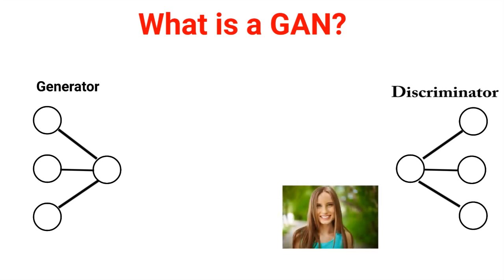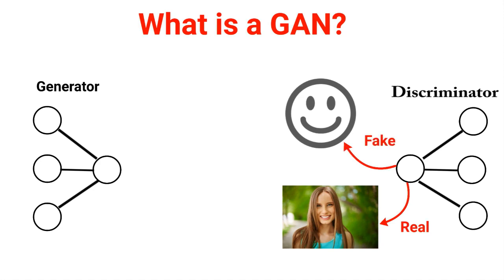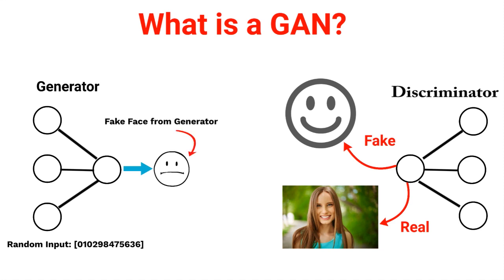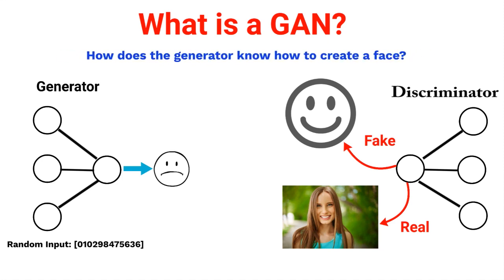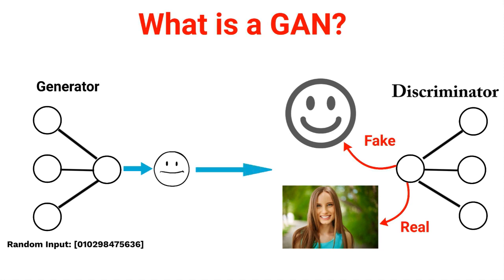The job of the discriminator is to distinguish between real images and fake images. The generator takes in a random array of numbers as input, and its goal is to turn that into an image of a face. That fake face is fed to the discriminator, which then tells the generator if the face it generated was real or not — and also how real or how fake it was. So the generator has an idea how much it needs to adjust, and this is what allows the generator to gradually improve as it's being trained.